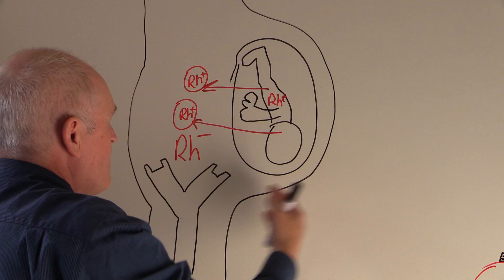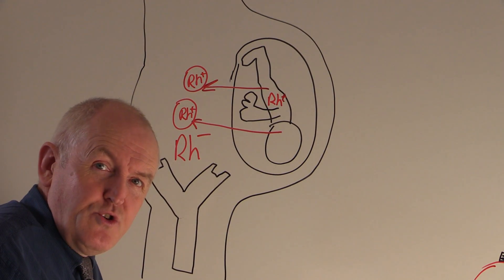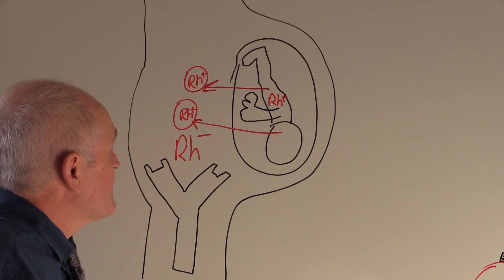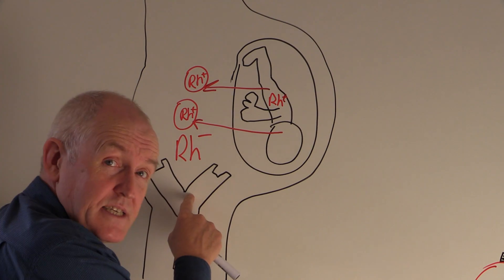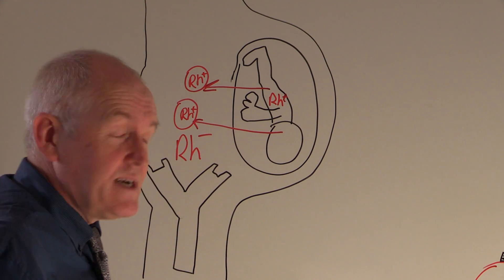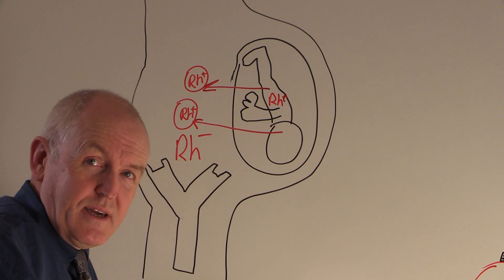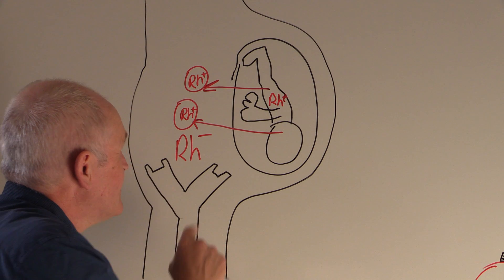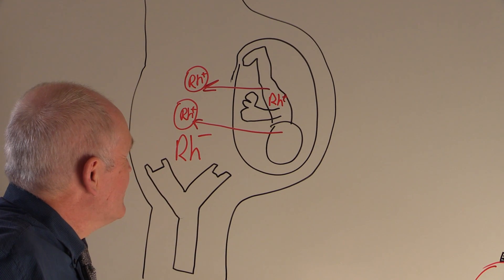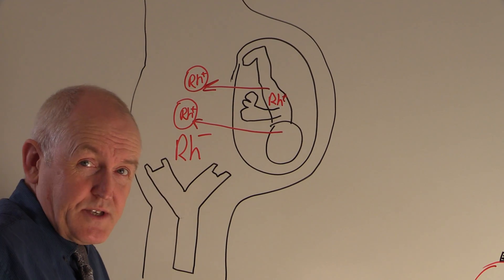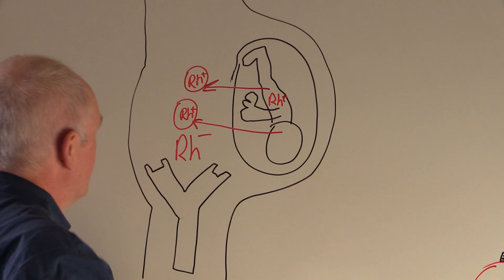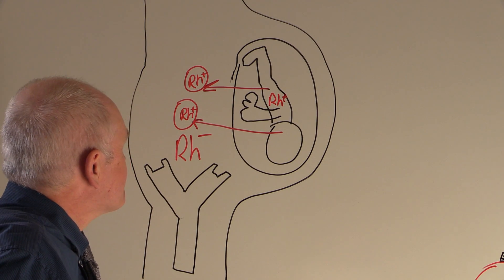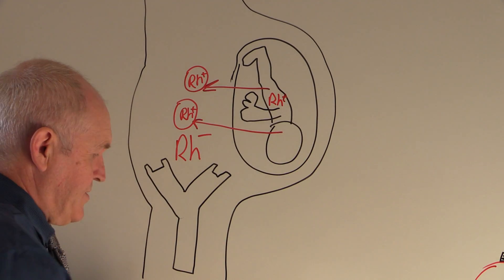This baby is going to be born, and during the first pregnancy there's not usually any problem because most of the sensitization is likely to take place during the birth. By the time the mother develops Rhesus factor antibodies after delivery, it's okay because the Rhesus positive baby has already been delivered. But what this means is that the mother is now sensitized to the Rhesus factor — she now has Rhesus factor antibodies because of the fetomaternal hemorrhage, the baby's red cells getting into the mother's circulation.